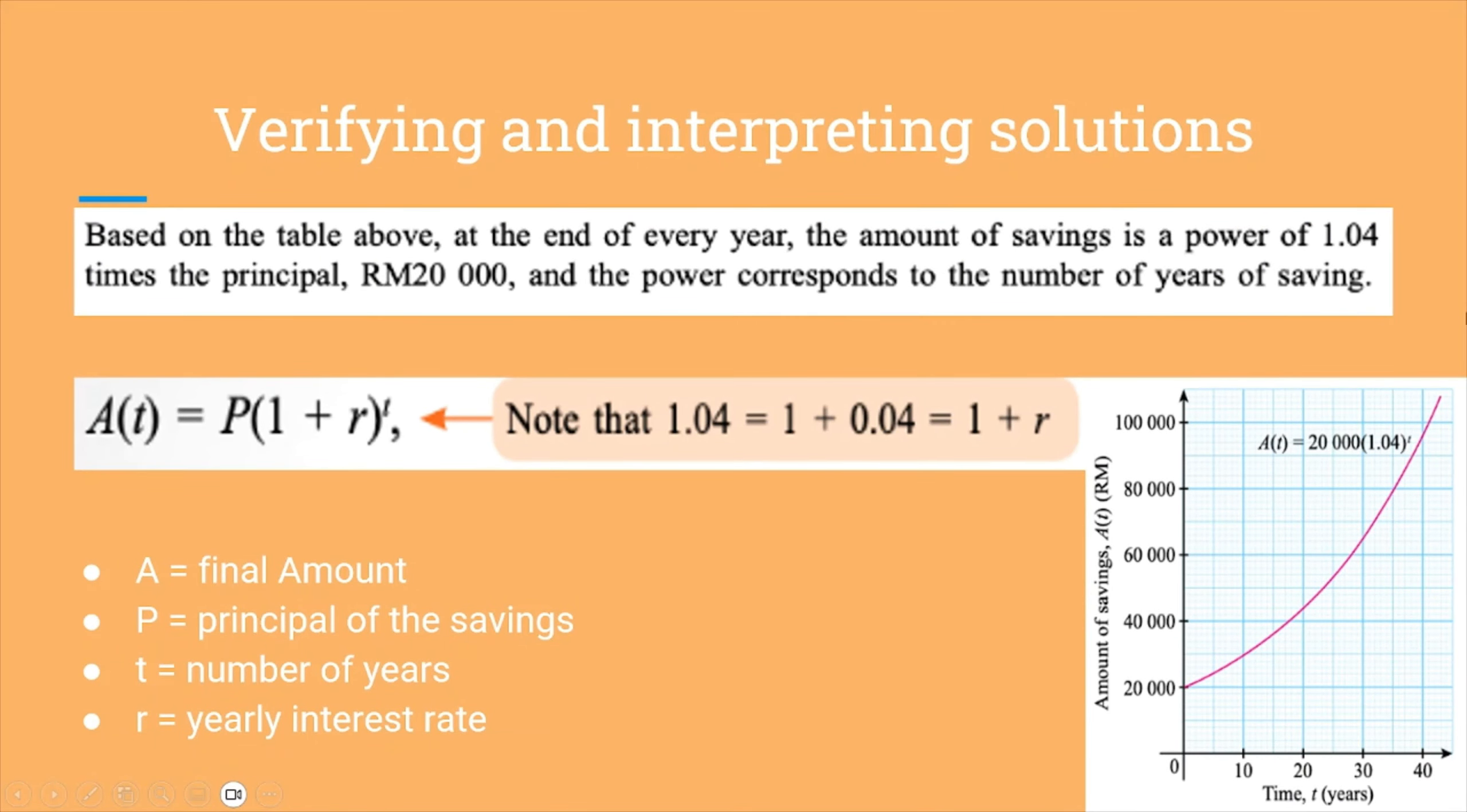Step 4, we verify and interpret the solution. Based on the table earlier, at the end of every year, the amount of savings is to the power of 1.04. So 1.04 times the principal of RM20,000, corresponding to the number of years, we can come up with a new formula. With A as the amount after T number of years, P the principal which is RM20,000, multiplied by the interest.